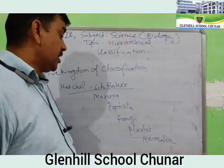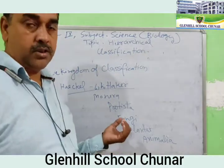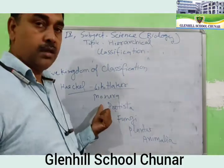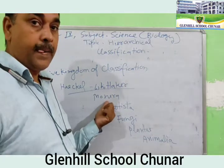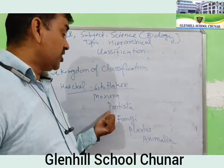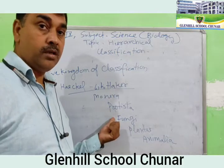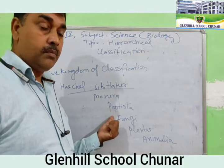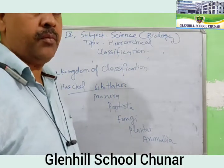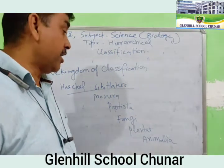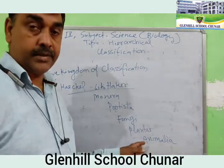Monera includes animals which are not seen by our naked eyes. Protista means they are cellular or acellular. Some are fungi; some get their food from dead and decaying organic matter. And then there are Plantae and Animalia.